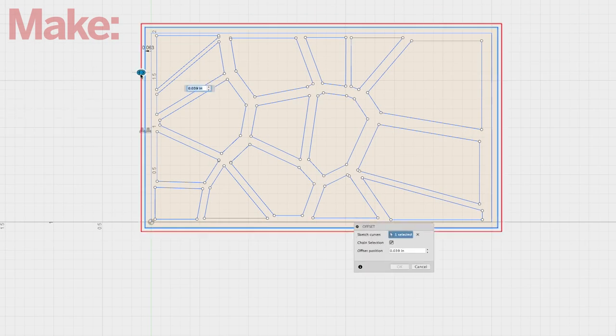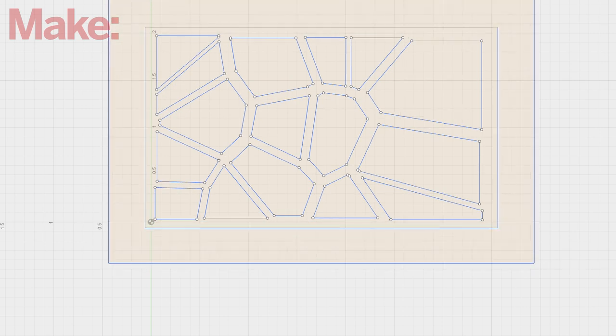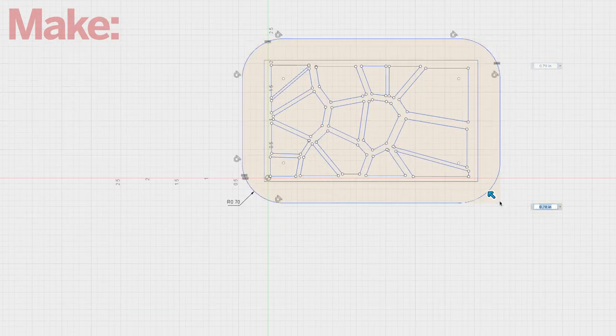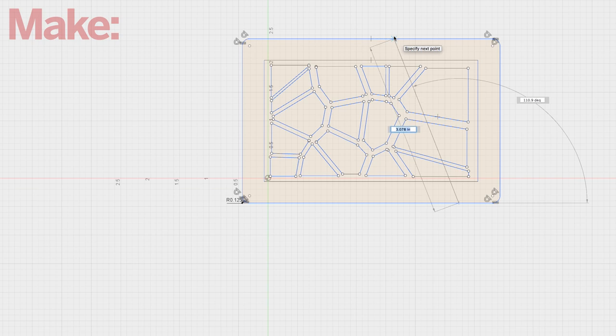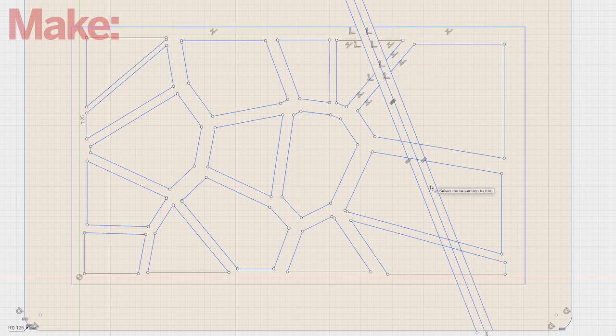Once we have our Voronoi pattern, we'll go back into our sketch to further design this plate. We need to pull a few offsets off of this rectangle and then round off the outside corners with a fillet. Next we'll sketch out the line where we separate the body plate from the lid. Pull a few offsets from this line—they're 1/16th inches apart.